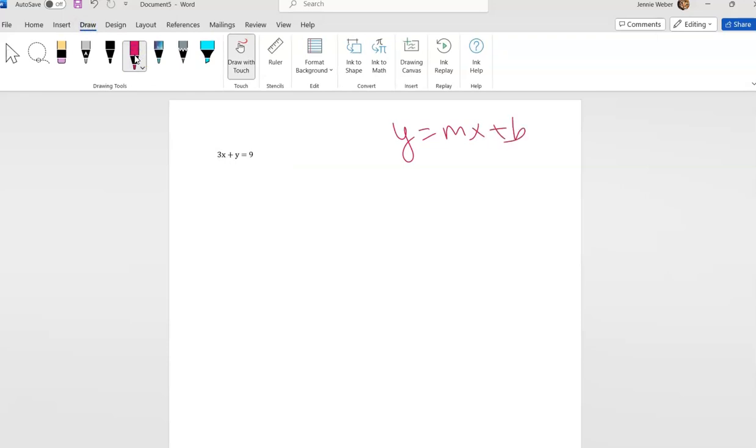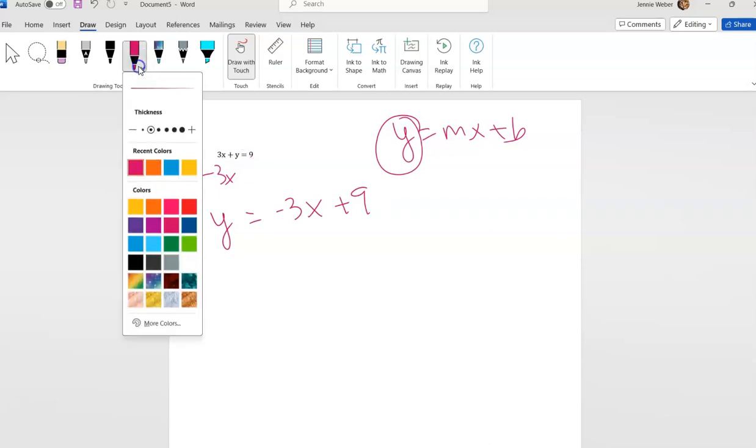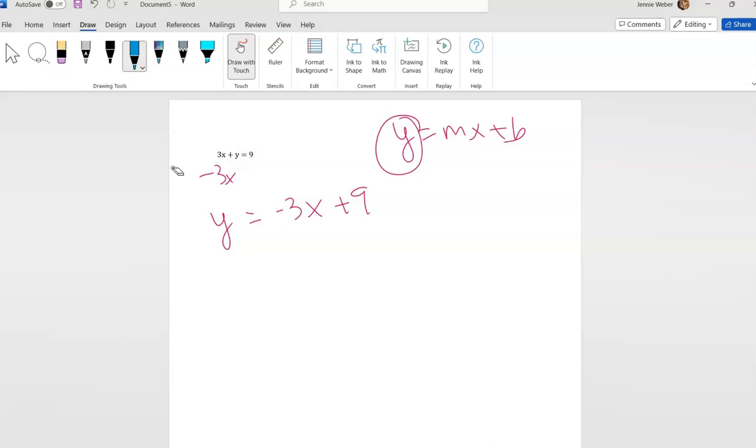I can see that I need this y by itself. Since this is already positive, I'm going to choose to move the 3x because you want this y positive to save myself a step. So y equals negative 3x plus 9. This is my equation in slope-intercept.